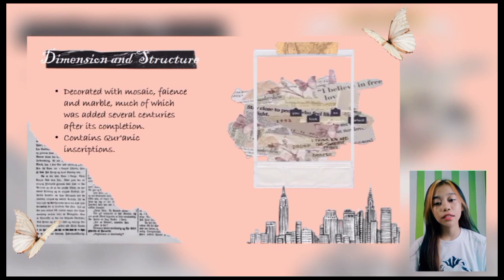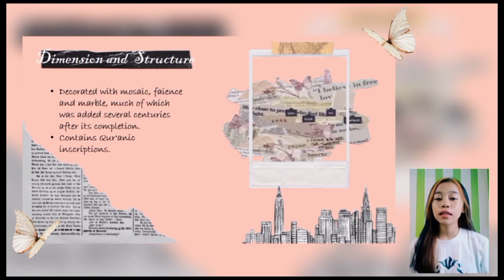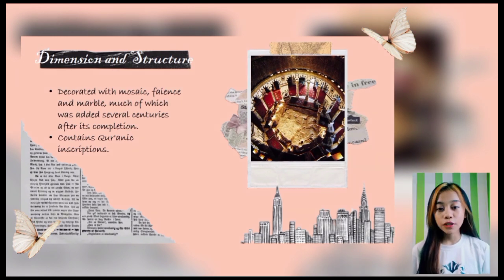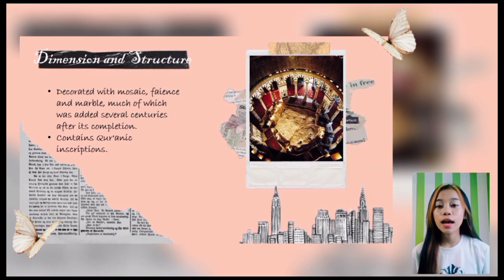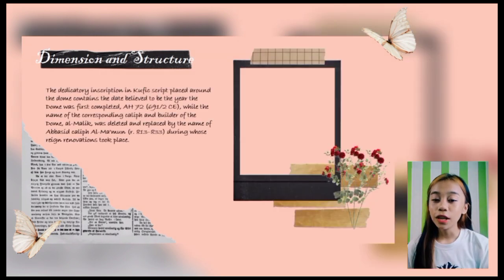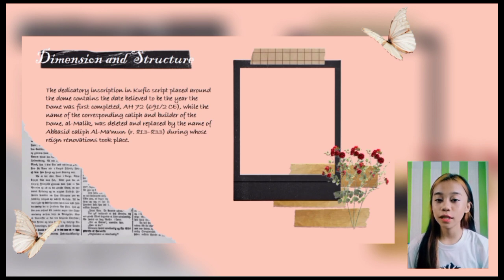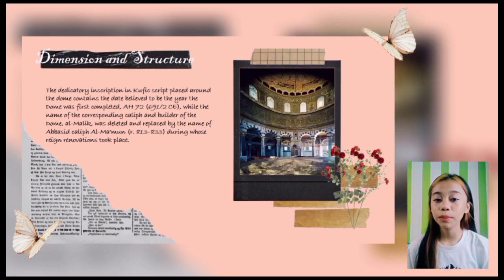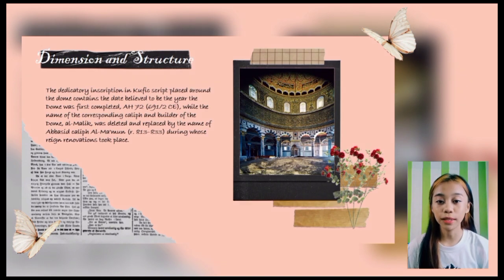The interior of the dome is lavishly decorated with mosaics, faience, and marble, much of which was added several centuries after its completion. It also contains Quranic inscriptions. The dedicatory inscriptions in Kufic script placed around the dome contain the date believed to be the year the dome was first completed.